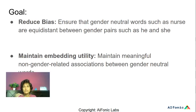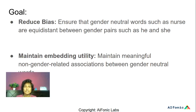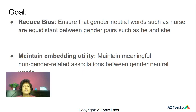The goal is twofold: first, reduce bias to ensure that gender-neutral words such as nurse or shopkeeper are equidistant between gender pairs such as he and she. But we also want to maintain embedding utility — maintain meaningful non-gender-related relationships between gender-neutral words — so that we can continue to use the embeddings in different applications.